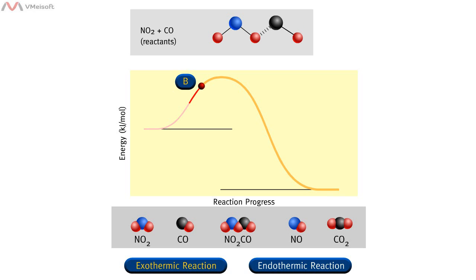When molecules collide, they form an activated complex, which is a temporary species formed by the reactant molecules as a result of the collision before they form product. In this reaction between nitrogen dioxide and carbon monoxide, the activated complex is NO2CO.